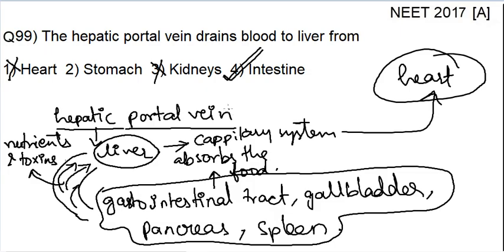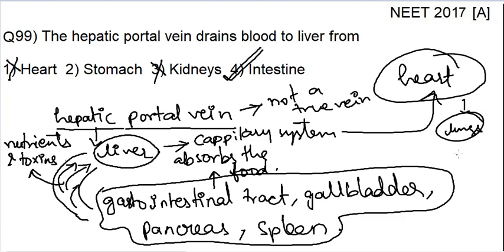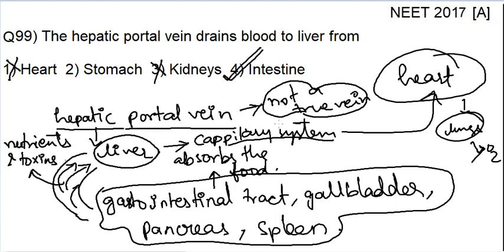One more point: this hepatic portal vein is not a true vein. It is not regarded as a true vein because it is not carrying the blood directly to the heart for getting it pumped to the lungs — where it will be oxygenated. Instead, it carries the blood first to the capillary system and then to the heart. That is why it is not regarded as a true vein. This can be a possible exam question as well. The most appropriate answer is intestine. I hope you got the answer. Thank you so much.